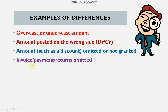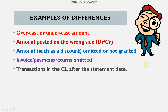Another common difference is an invoice, payment, or return that is simply omitted. These transactions — from the CJ, CPJ, or CAJ — are just not there: not in our books or not on the statement. It's not a wrong amount or wrong side — it's simply missing. We need to establish whether it is a legitimate transaction before treating it as an omission.